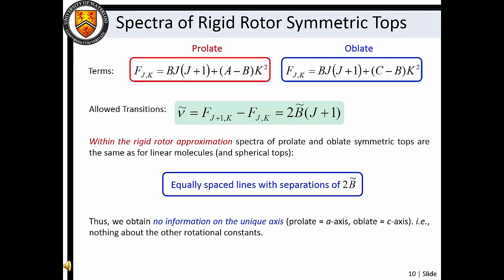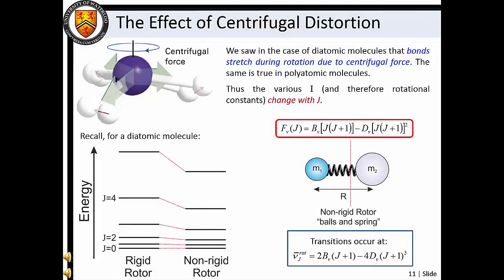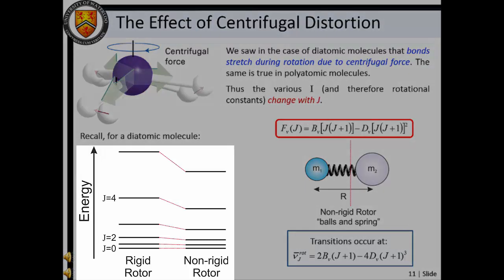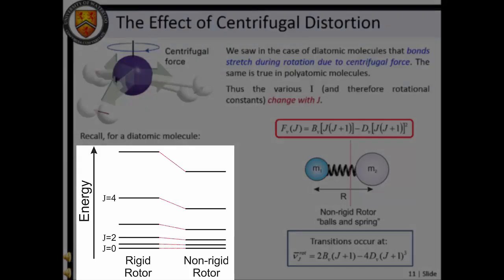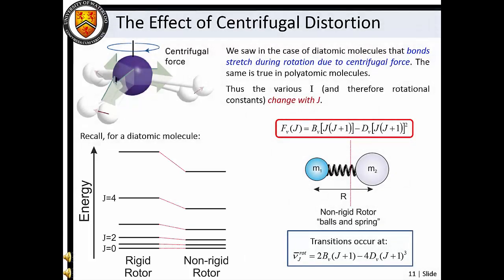In other words, if symmetric top molecules were rigid systems, we would obtain no information concerning rotation about the unique axis. The concept of centrifugal distortion was also discussed in Masterclass 6. For polyatomic species, bonds and bond angles are distorted by the centrifugal force associated with molecular rotation. To account for these geometry changes in symmetric tops, three centrifugal distortion constants are required: D_K, which describes the distortion about the symmetry axis; D_J, which describes the centrifugal distortion as a function of overall molecular rotation; and a cross term D_JK, which describes the coupling between rotation about the unique axis and the end-over-end rotation of the molecule.